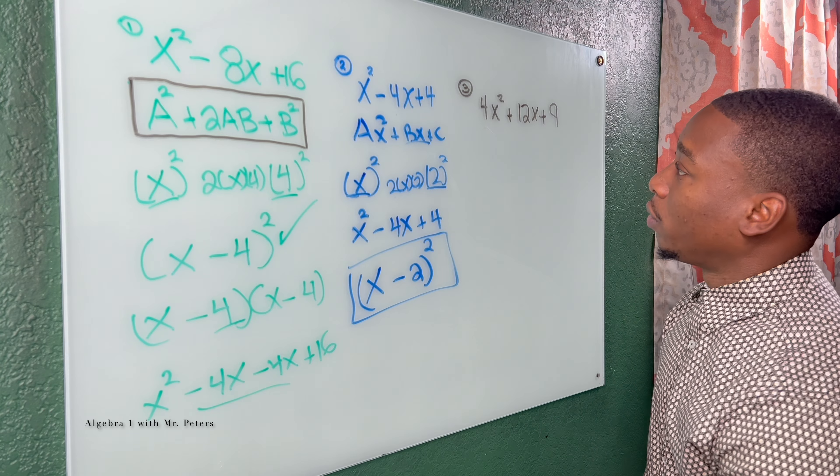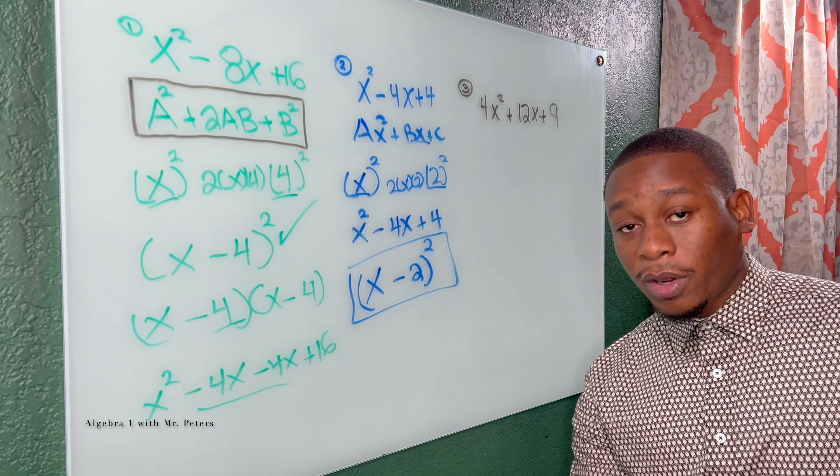Now in the third example, they're going to try to trick you by giving you a lead coefficient. So what we would do, we could go ahead and multiply 4 by 9 and use the AC method to factor, but I would tell you guys don't if they're just asking you if it's a perfect square trinomial. Don't use that method.